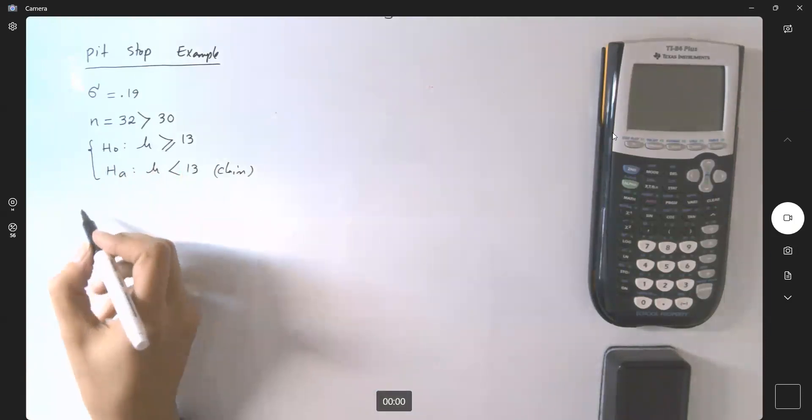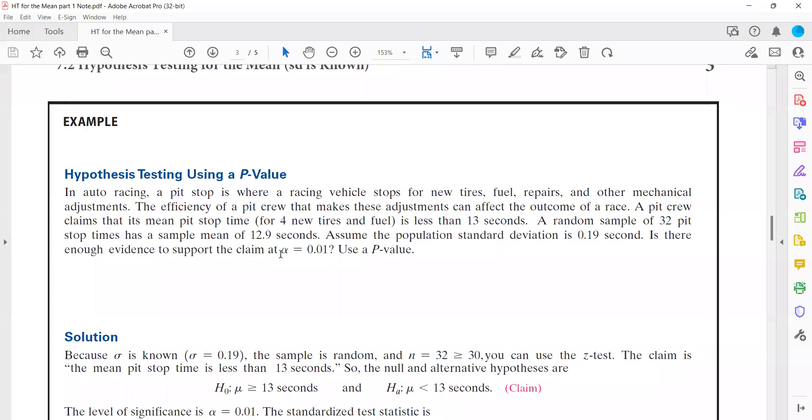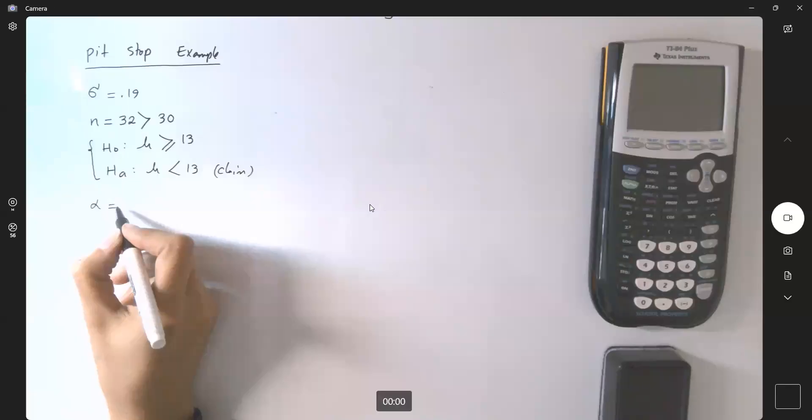Now we have to go to the next step. What is my alpha? What is the level of significance? Here, the level of significance, or alpha, is given to you as one percent. So let's go back to the board. One percent, 0.01 or 1%.